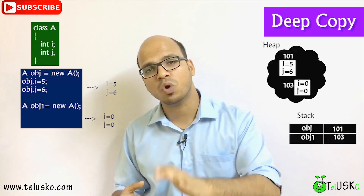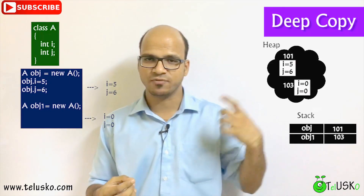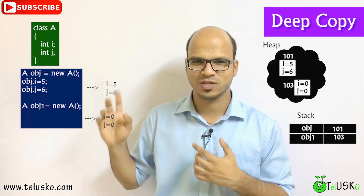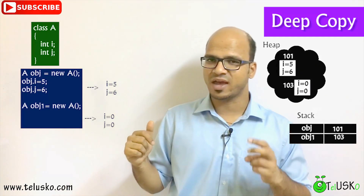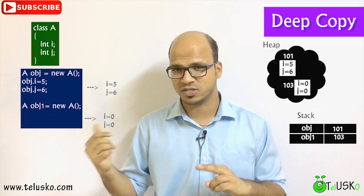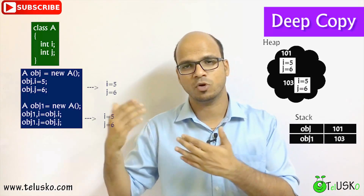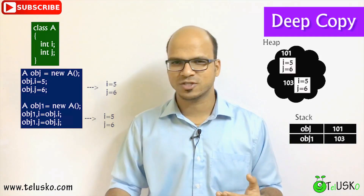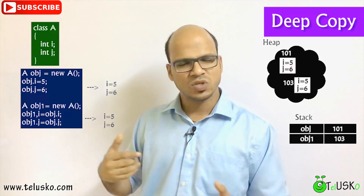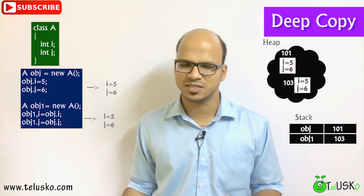The next one is deep copy. In deep copy you create a new object, so in total you have two objects, and you manually copy each value. You have A obj = new A and A obj1 = new A. For obj you set i as 5 and j as 6, then for obj1 you say obj1.i = obj.i, manually copying each value. The problem is if you have 15 or 20 variables, copying one by one is not ideal. That is deep copy — it works, but it's not a good approach.